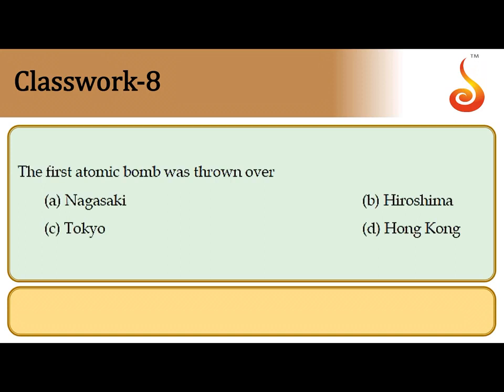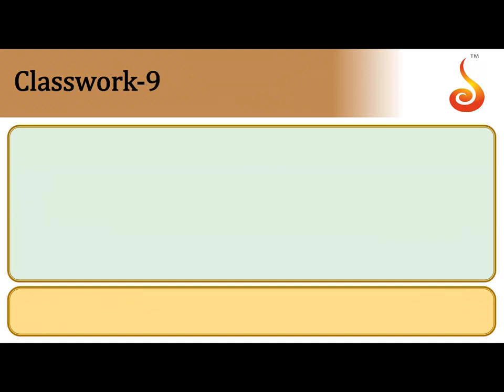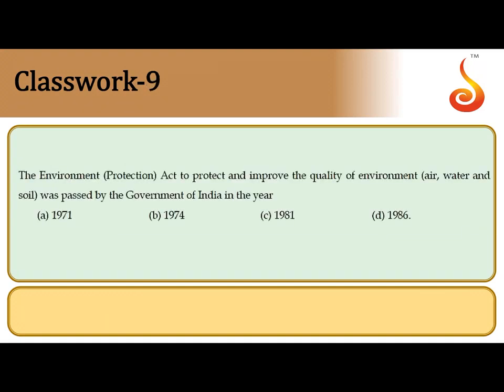The eighth question: The first atom bomb was dropped over the city of Hiroshima in Japan in August 1945. The correct answer is option B.